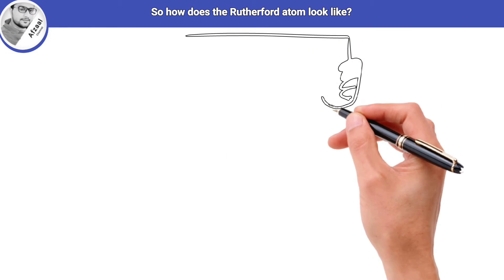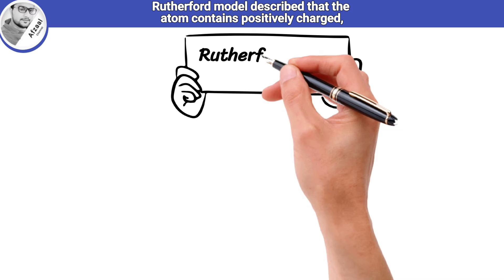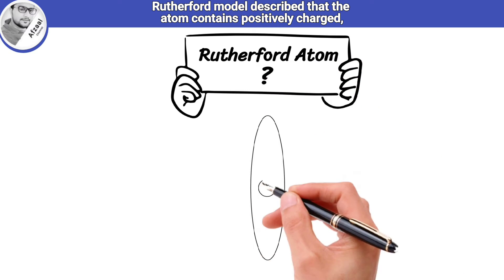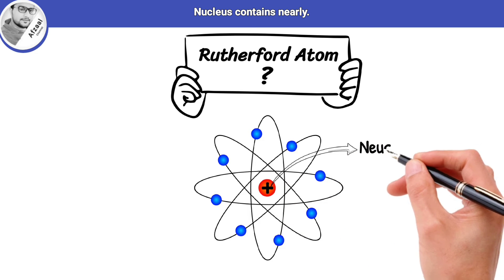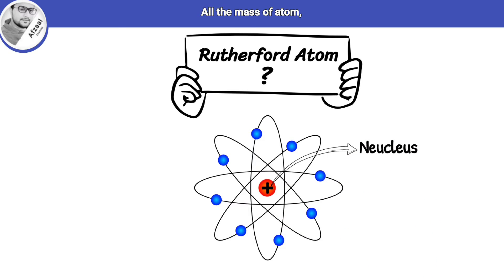So how does the Rutherford atom look like? Rutherford model described that the atom contains positively charged central part called nucleus. Nucleus contains nearly all the mass of atom.